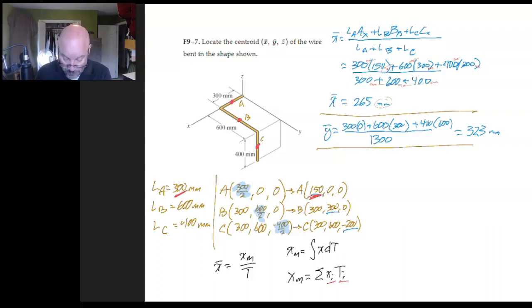And finally, let's do Z here. Okay. Same thing. I know it's 1,300 on the bottom. Okay. And I'm going to go 300. My Z location for that's zero. 600. My Z location for that's also zero. Plus 400. Now, my Z location is minus 200. And work all that out on your calculator. And what you're going to get is negative 61.5 millimeters.